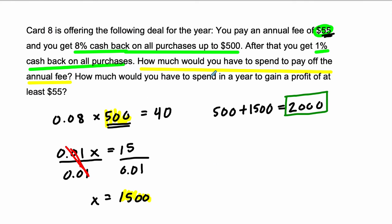How much do we get to spend in a year to gain a profit of at least $55? So another $55. And we've already spent $2,000 just to break even. So now we need another $55 that we want to get back.